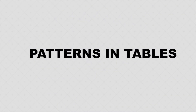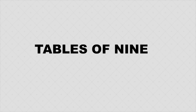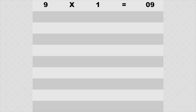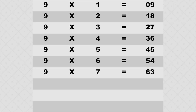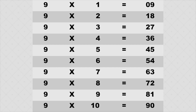I am going to show the patterns of tables of 9 and 10. Let us recall the first 10 multiples of 9: 9 into 1 is 9, 9 into 2 is 18, 9 into 3 is 27, 9 into 4 is 36, 9 into 5 is 45, 9 into 6 is 54, 9 into 7 is 63, 9 into 8 is 72, 9 into 9 is 81, 9 into 10 is 90.